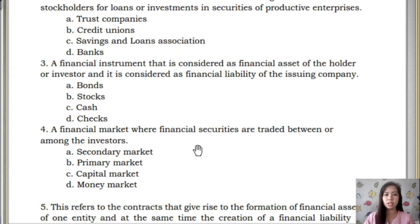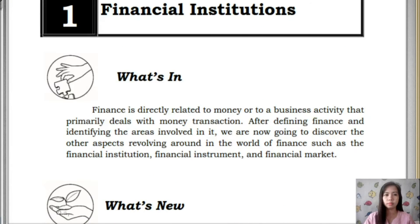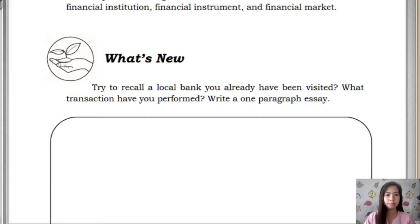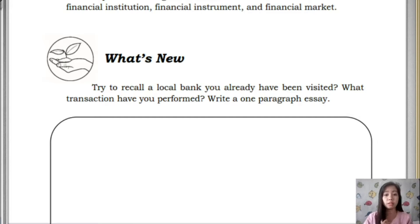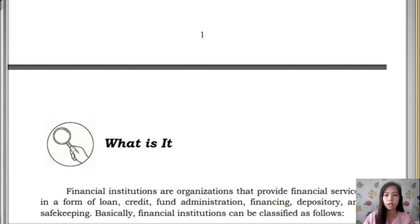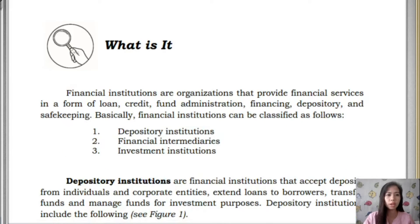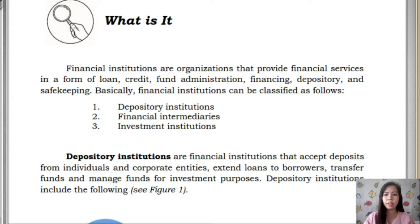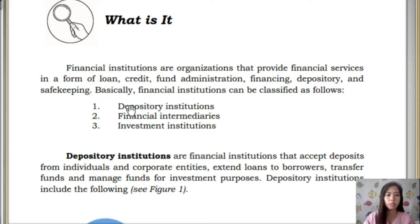Let's start with Financial Institution. Financial institutions are organizations that provide financial services in the form of loans, credits, fund administration, etc. Under Financial Institution, you have three categories: Depository Institution, Financial Intermediaries, and Investment Institution.